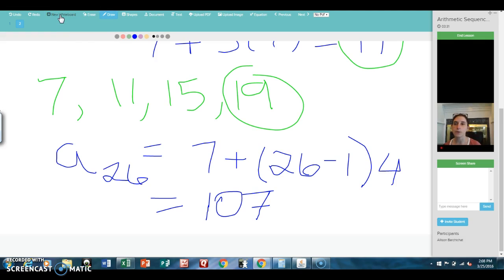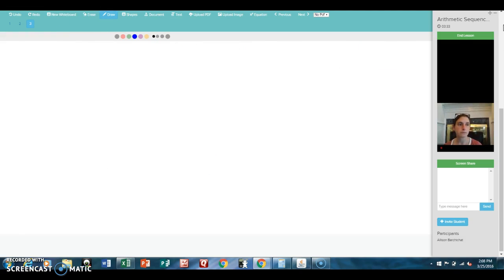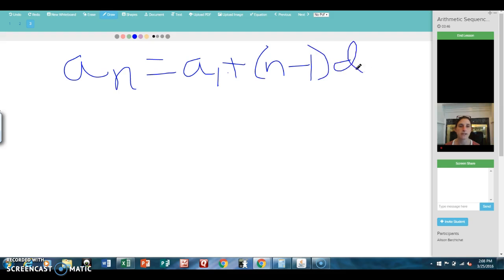Let's try another example problem. So again we're going to use this equation. The nth term equals the first term plus N minus 1 times the common difference D.